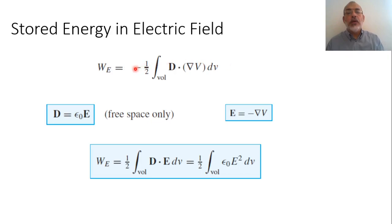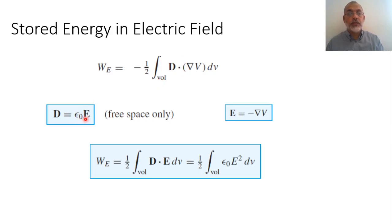The stored electric energy is now represented as minus half the integration over the volume of D·∇V dV. Recalling that −∇V equals the electric field E, we replace the gradient of the potential by E. The electric flux density D equals εE. So the stored electric energy becomes positive, equal to half the volume integral of D·E dV.